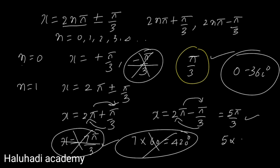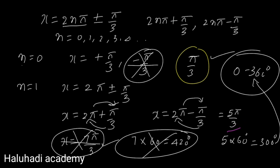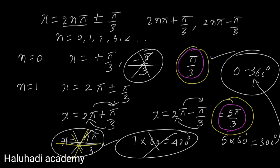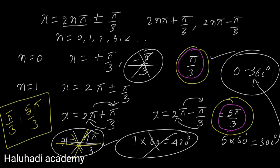Therefore 5π/3 is a principal value. So the two principal values of sec x equals 2 are π/3 and 5π/3. This is the end of the session. The next two problems will be covered in the next session. Please subscribe, share my channel, and watch on YouTube. Thank you.